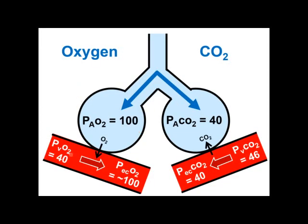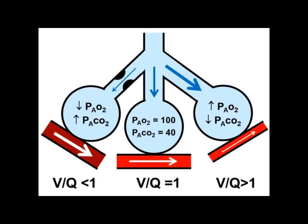For normal values: mixed venous PO2 returning to the lungs is 40, normal alveolar O2 is 100, and after diffusion, end-capillary O2 is around 100. CO2 is more highly diffusable than oxygen. Mixed venous PCO2 coming in is 46, and after diffusion the alveolar PCO2 is 40. The normal VQ ratio is 1 — for most adults at rest, minute ventilation is about 5 to 6 liters per minute and cardiac output is about 5 to 6 liters per minute, giving a ratio of 1. At VQ = 1, PO2 = 100 and PCO2 = 40.